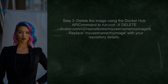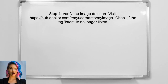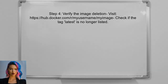Next, the user can delete the image using the Docker Hub API. This requires sending a delete request to the appropriate endpoint. After executing the delete command, the user should verify that the image has been removed from Docker Hub. This can be done by checking the repository on the Docker Hub website.